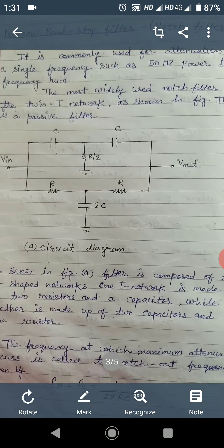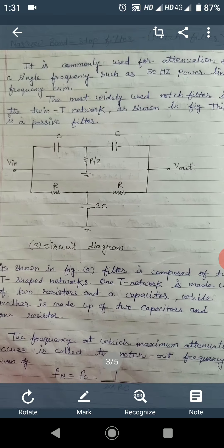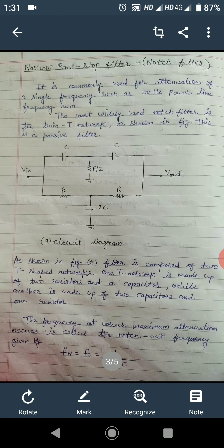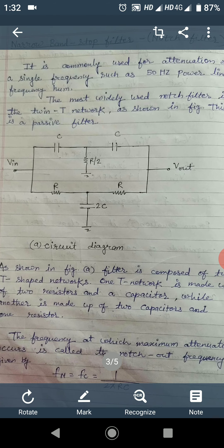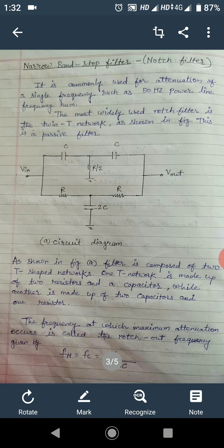Next is the narrow band stop filter, also called the notch filter. It is commonly used for attenuation of a single frequency. It is a very narrow band stop filter, meaning the stop band is very narrow, and it is used to attenuate a certain frequency like 50 Hz in power line frequencies.